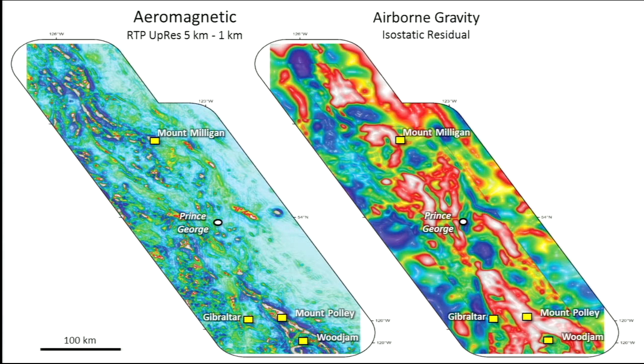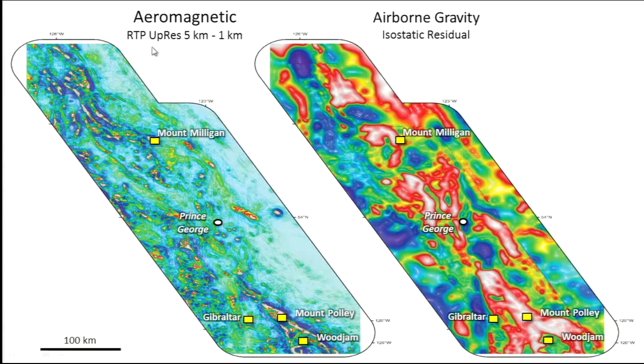To the left there is an upward-continued residual from the magnetic data, which was one of the principally used products. The idea of these different levels of upward continuation was to try to enhance signals coming from different depth levels — in this case, to partially remove the signals coming from the till, the sediments, and the Tertiary basalts. This was a technique I learned from my time at MDIU working with the Fathom team. To the right is the airborne gravity data, which we use to feed that interpretation.